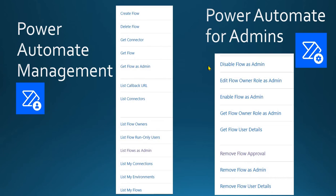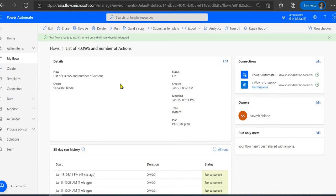We'll be creating another flow to get all this data using flow connectors. There are two relevant connectors: Power Automate Management and Power Automate for Admins. These connectors have actions to get flows, create flows, delete flows, get list of flows as admin, list flows you've created, get connections, stop a flow run, turn on or turn off a flow. We'll be using one of these actions to get the full list of flows.